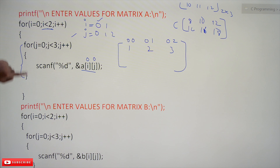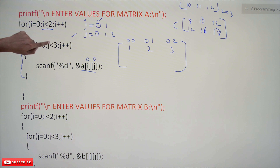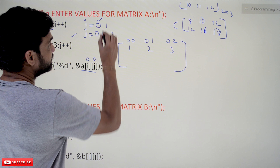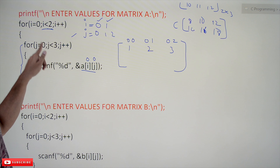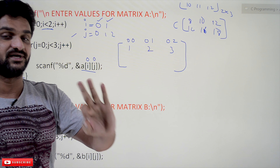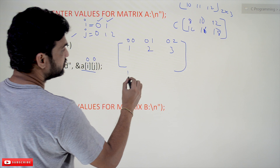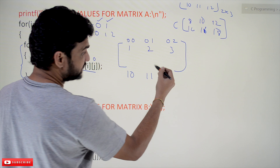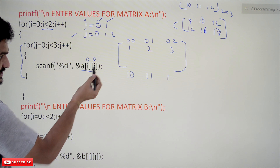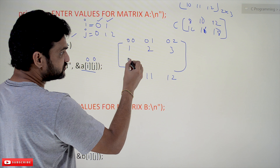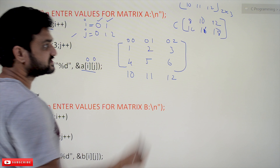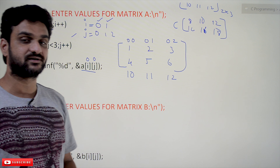Next, A[0][2] is scanned — assume the user enters 3. The inner for loop then ends because j equals 3, and 3 is not less than 3. The outer loop iterates again with i equal to 1. Now the inner loop runs three more times, scanning indices A[1][0], A[1][1], and A[1][2]. If the user provides values 4, 5, 6, the complete matrix A is filled.